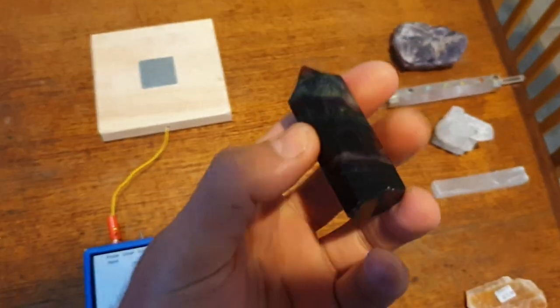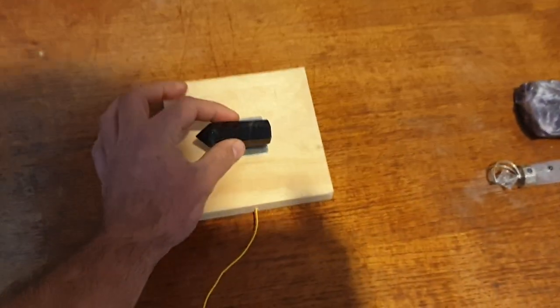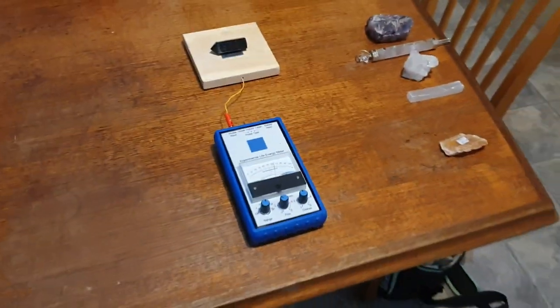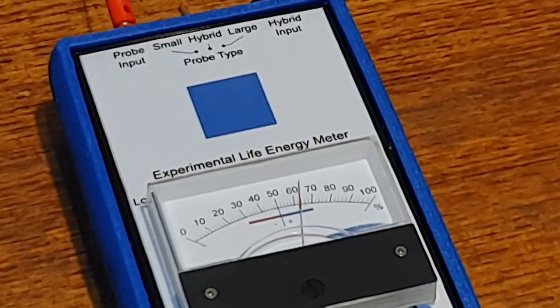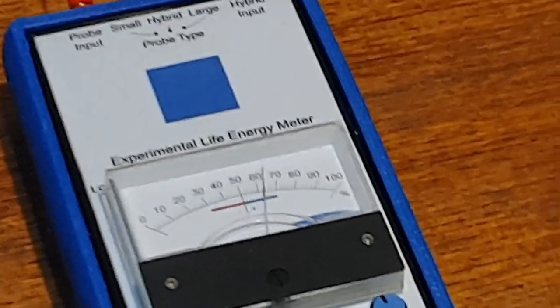Now I've got a piece of fluorite. All right, so put that on there. Step back. So that's around 62, 63. Yeah, I'd say 63.